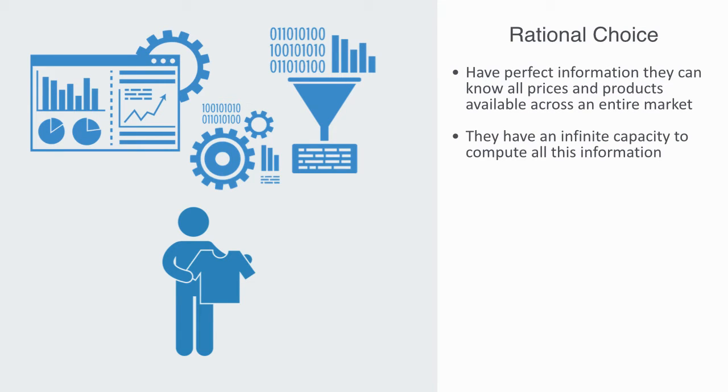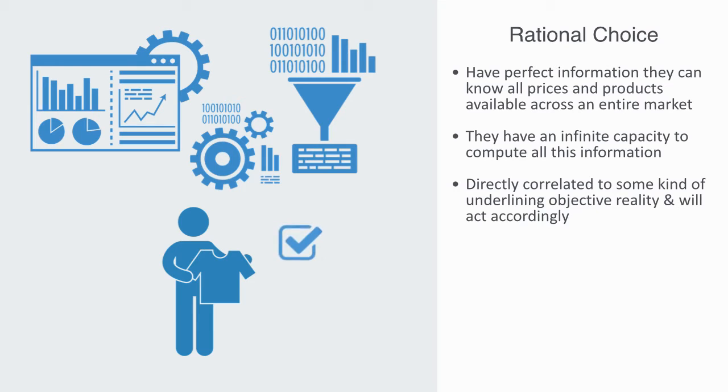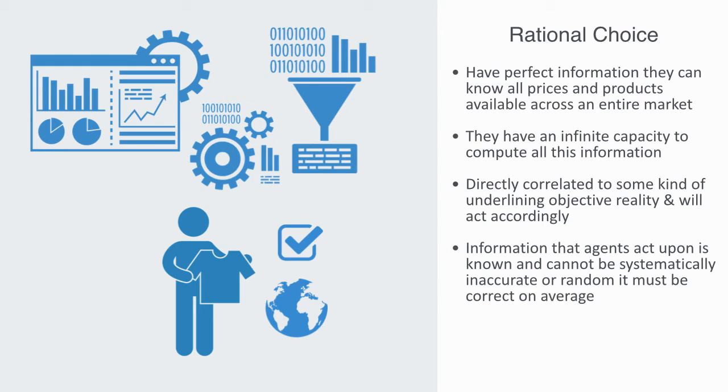And they have an infinite capacity to compute all this information. From this, they can, on aggregate, derive information that is directly correlated to some kind of underlying objective reality. And then, will act in a logically consistent manner upon this information. This is the so-called rational expectations hypothesis that basically says that the information that agents act upon is known and cannot be systematically inaccurate or random.